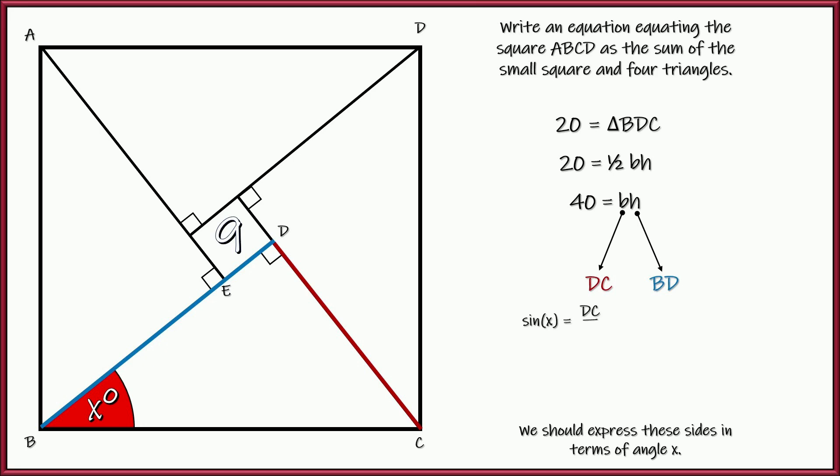So we know sine of angle x, that's opposite over hypotenuse. And the hypotenuse, that's going to be the square root of 89. So we have DC over the square root of 89.